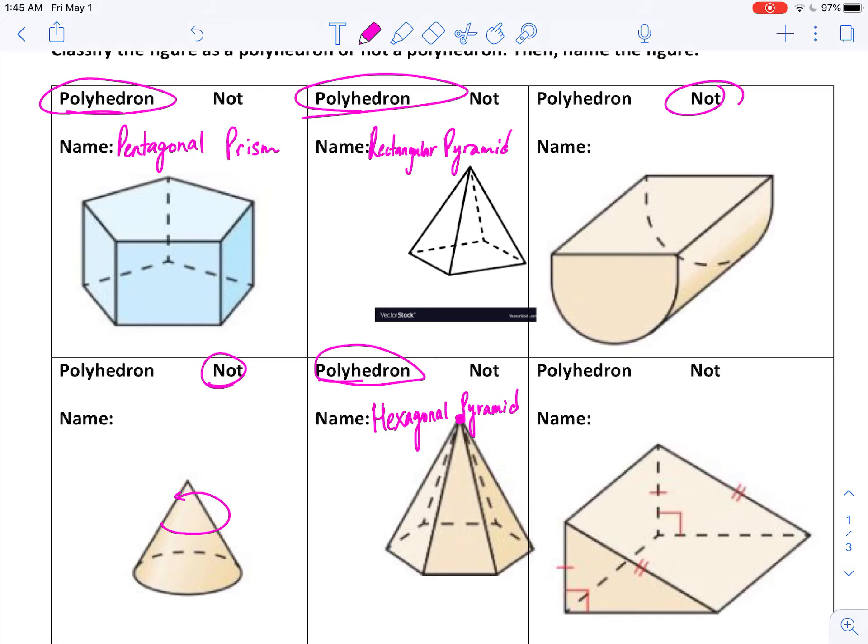And this one can get kind of tough in number six. So I know it is a polyhedron because it is all flat sides. But what is the base? Is this a rectangular prism? Is this a rectangular pyramid? What am I looking at? Well, these are not all coming to a single vertex. So it is not a pyramid. It must be a prism.